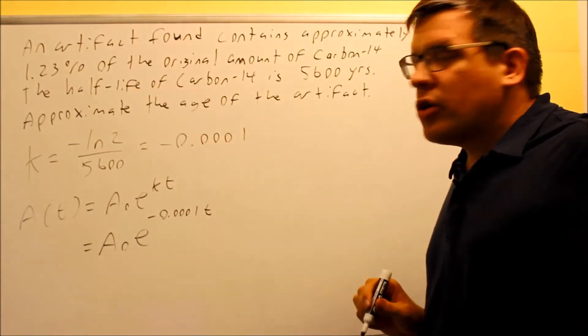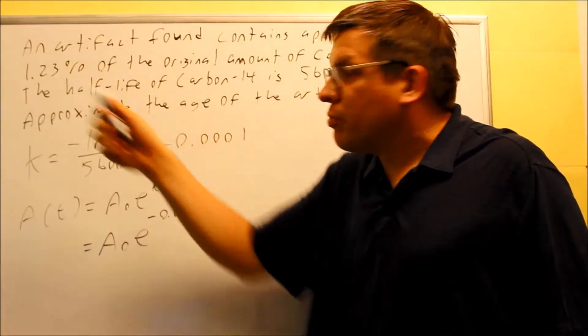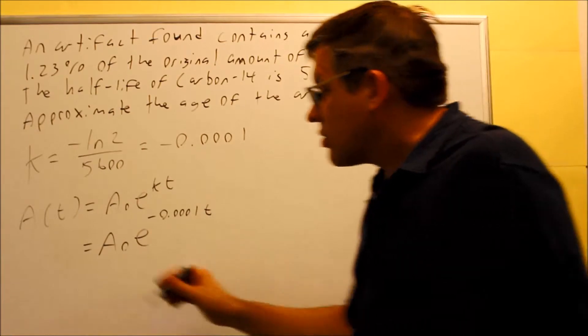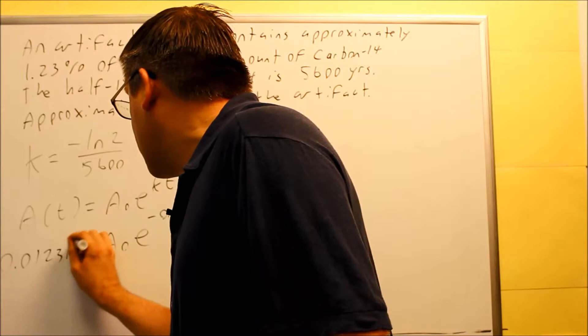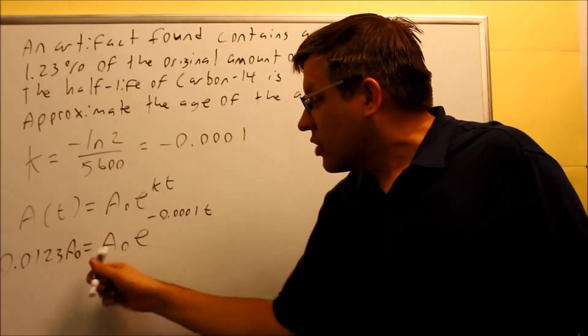So we're going to take 1.23%, we're going to change it into a decimal. You move the decimal two places over to the left, and you get 0.0123. So here, for the current amount, that's going to be 0.0123 of the original amount that we're starting with. So that's what we're going to represent this here.